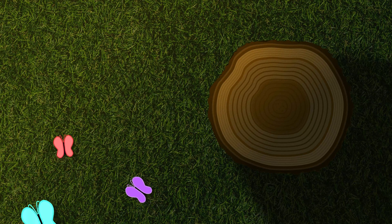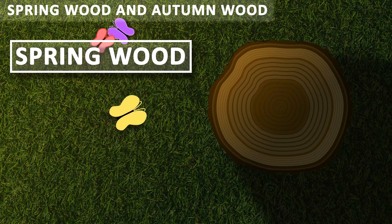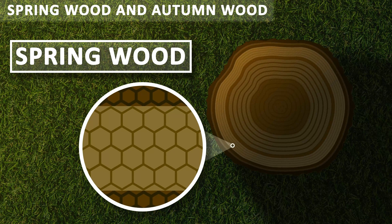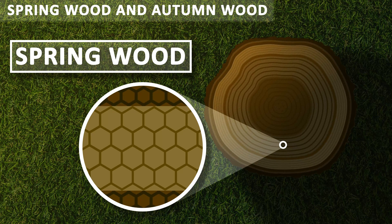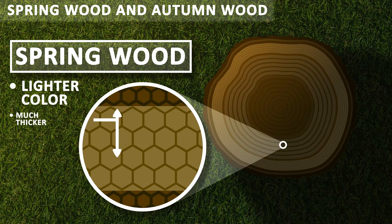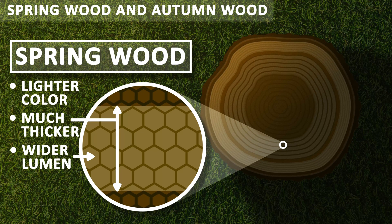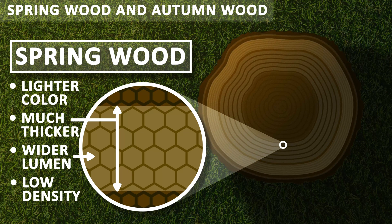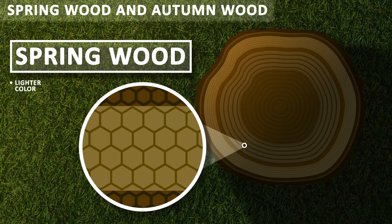The spring wood, as clear from its name, is formed during the spring season or early in the season, so it is also called early wood. It is lighter in color and thus represented by the light brown rings in the diagram. The thickness of spring wood is more because during the spring season the vascular cambium has higher activity and thus forms more amount of wood. It also results in formation of vessels having wider lumen. The lumen represents the empty spaces inside the dead cells, and these wider lumens are responsible for the low density of spring wood.